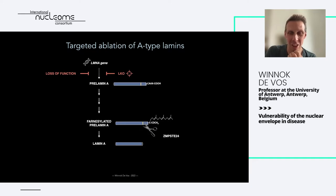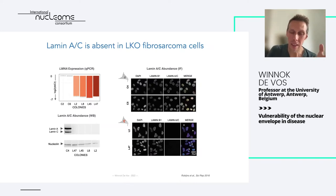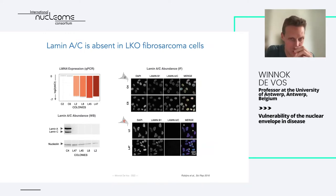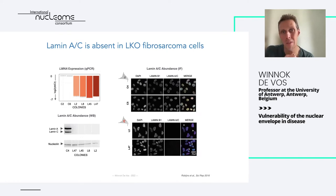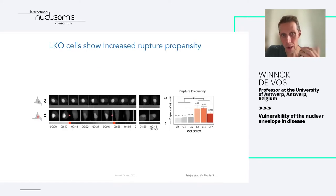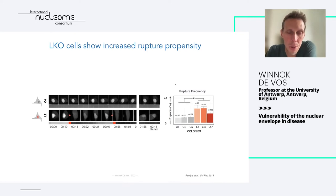The first thing we did was ask whether lamin is important in generating ruptures. We established LMNA knockouts using CRISPR technology — initially single-cell colonies, though we now tend to use pools because individual clones can drift and deviate significantly. We validated them as complete knockouts; strangely, we almost never find heterozygous or haploinsufficient phenotypes. We also validated that these cells experienced excessively more ruptures. It should be mentioned we did this in fibrosarcoma cells, which already experience quite a lot of rupture events — something we don't find in fibroblasts.